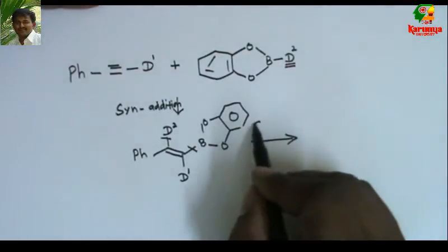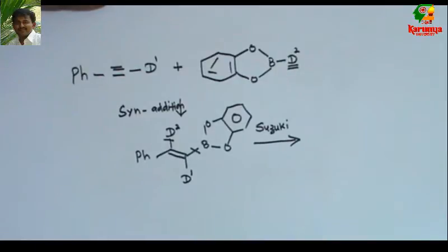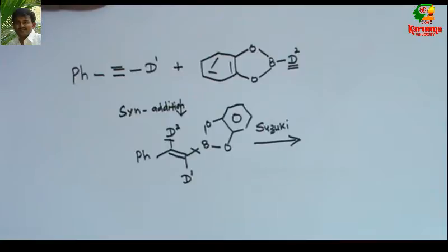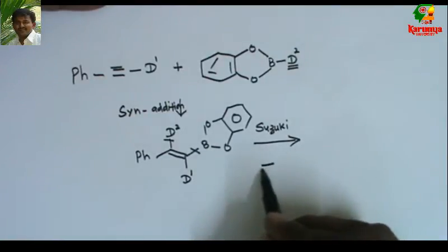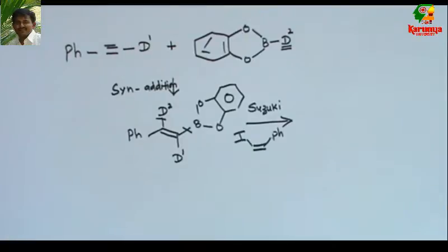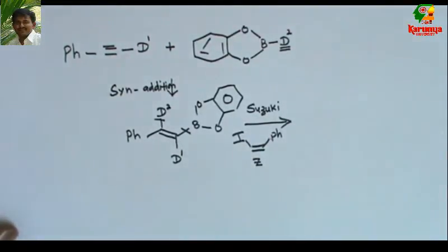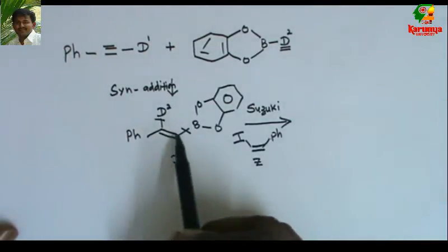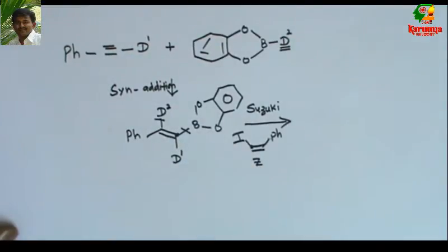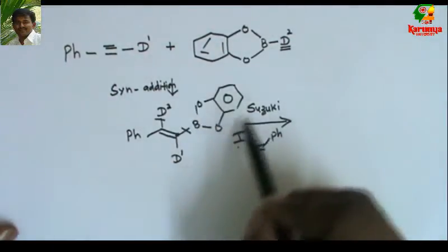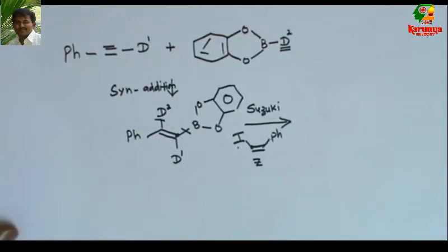The second reaction is Suzuki coupling. In Suzuki coupling, a vinyl borane adds to a vinyl iodide to give the coupled product in the presence of palladium. The compound given here has Z stereochemistry. A new bond is formed between this carbon and this carbon, and the iodine and the catechol boron group get eliminated.